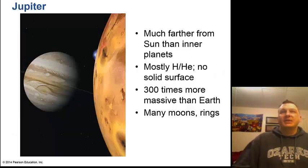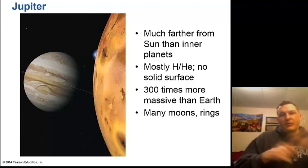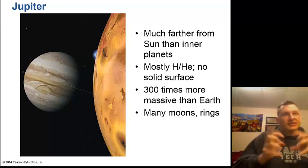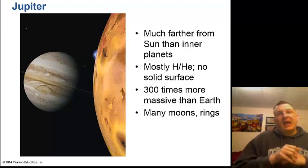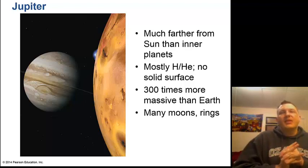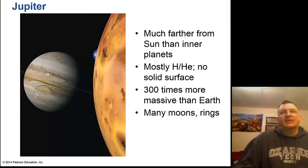Jupiter is the biggest planet, much farther from the Sun than the inner planets. The four inner planets — Mercury, Venus, Earth, and Mars — are rocky and small with a solid surface. Jupiter is a gas giant with no solid surface to walk on. It has over 60 moons, ring systems, and is 300 times more massive than Earth. Jupiter is made mostly of hydrogen and helium, but cold hydrogen and helium — unlike the Sun.